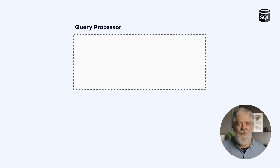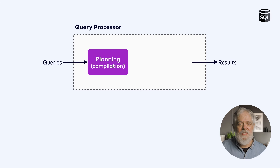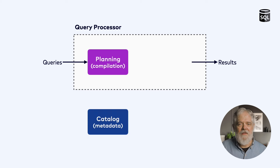The most important component in a database is the query processor, which receives queries and produces results. Query processing involves two key phases. First, a planning phase where the query is parsed and compiled into an execution plan. In order to create this execution plan, the query planner must have access to metadata about the tables, functions, and other database objects used by the query. This information lives in a catalog.